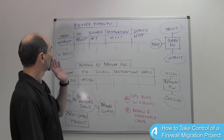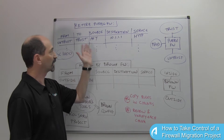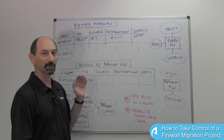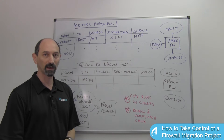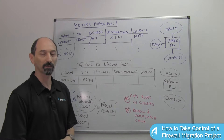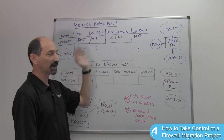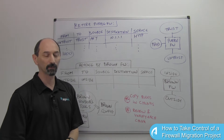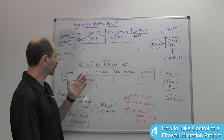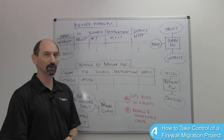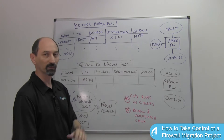Imagine you have in your environment a firewall that you need to retire — this is the purple firewall. Perhaps it's already too old and out of support, or perhaps it's just not keeping up with bandwidth and you need to retire it and replace it with something new. And maybe you got a good deal from the brown firewall vendor and you're going to replace the purple firewall with a brown firewall.